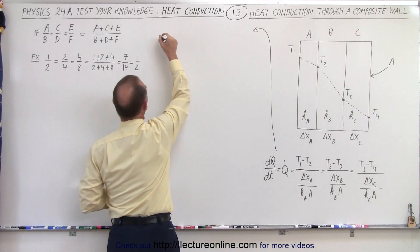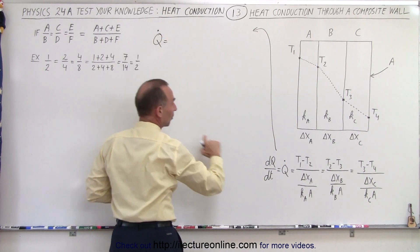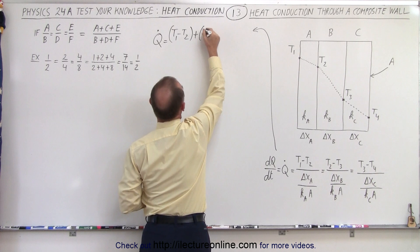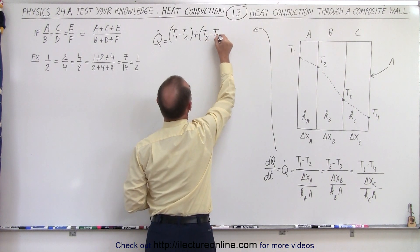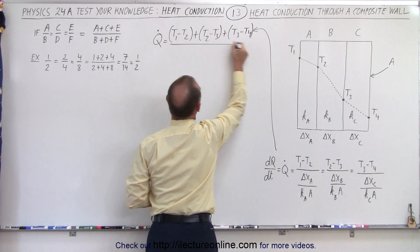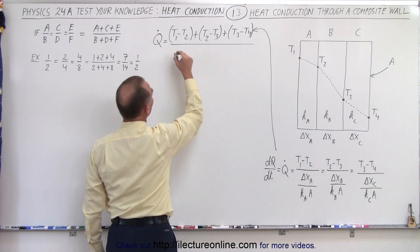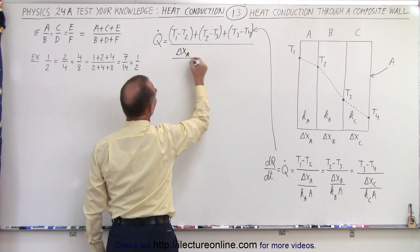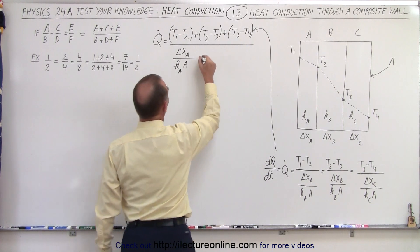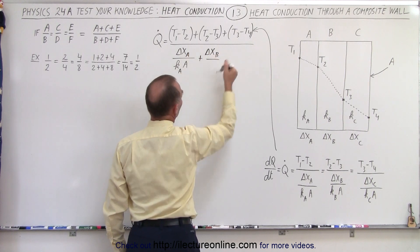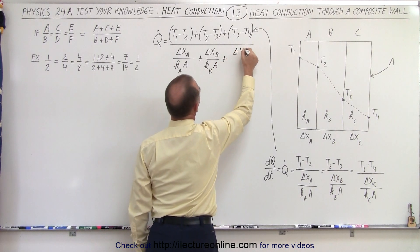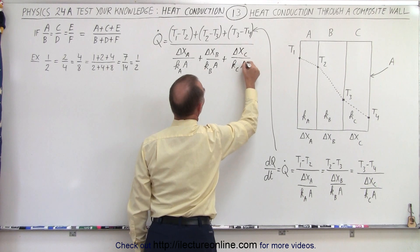We can now write that the heat flow Q equals the sum of all the numerators — that's (T1 minus T2) plus (T2 minus T3) plus (T3 minus T4) — divided by the sum of all the heat resistances: delta X sub A over K sub A times the cross-sectional area, plus delta X sub B over K sub B times the cross-sectional area, plus delta X sub C over K sub C times the cross-sectional area. Note that all cross-sectional areas are the same.